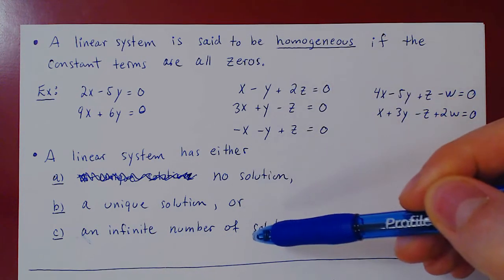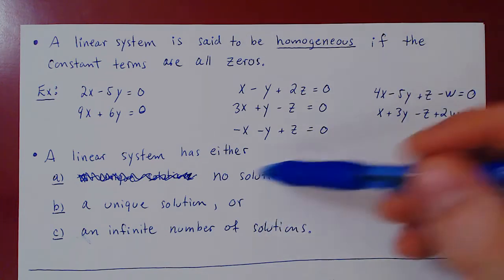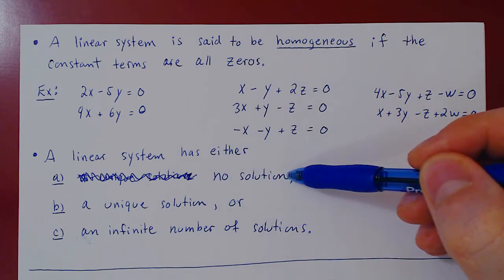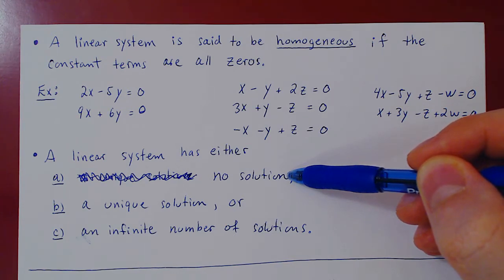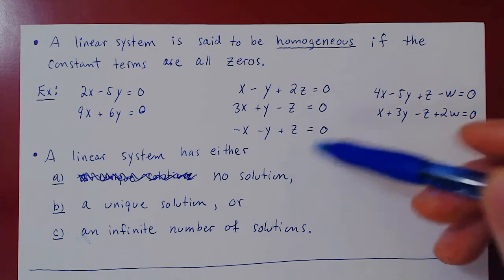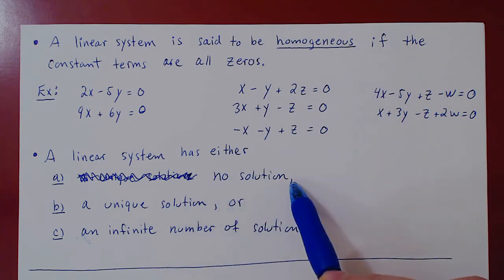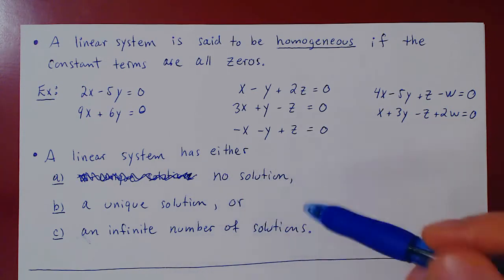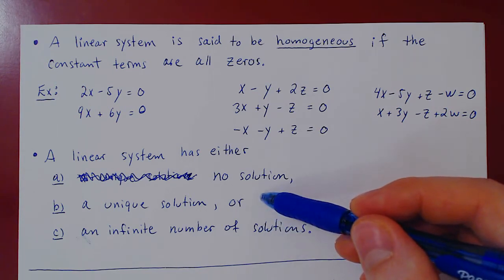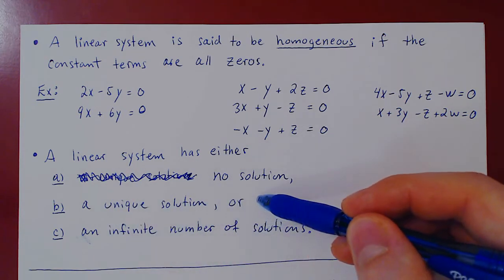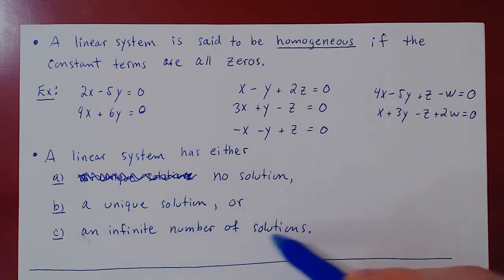We can think of this quite simply in terms of the type of variables. As we row reduce a linear system, we may end up with a row of zero coefficients but a non-zero constant term. This implies that zero equals something non-zero, which is not possible — giving us an inconsistency, meaning the system has no solution. If this does not happen, we will have solutions. Either all the variables are leading, giving a unique solution, or at least one variable is free — and a free variable becomes a parameter that can take on any real value, giving an infinite number of solutions. That is the heuristic argument for this theorem.